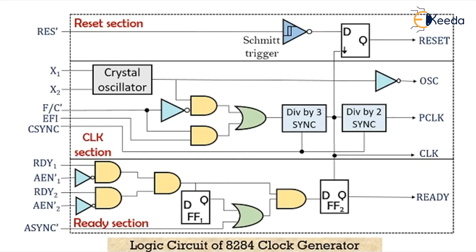Looking at the logic diagram, the outputs from the clock section are OSC, CLK, and PCLK. The crystal oscillator present in this section generates a square wave signal as the output when the crystal is attached between the two inputs X1 and X2. The frequency of the generated square wave signal is equal to the frequency of the crystal.